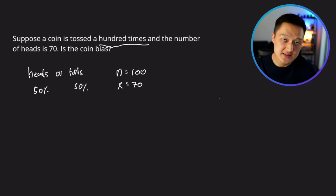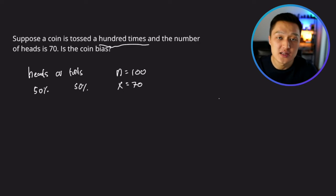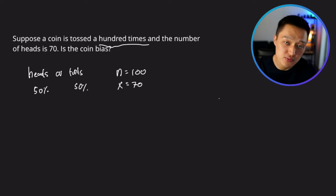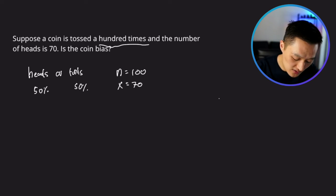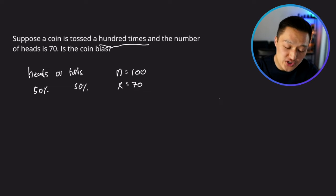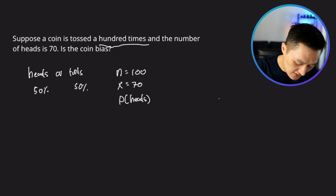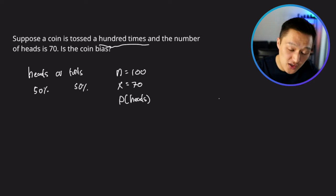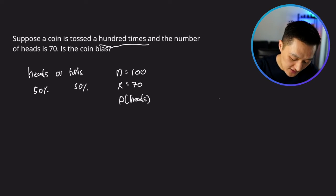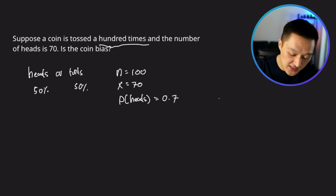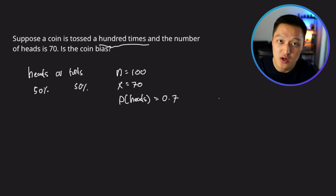What this means is that if you toss a hundred times and your outcome is 70, then the proportion of heads for this particular coin is going to be 0.7, or 70 divided by 100.